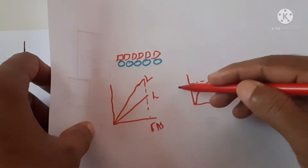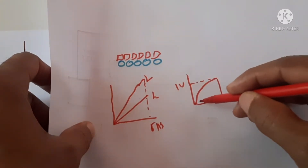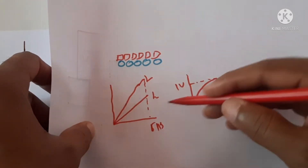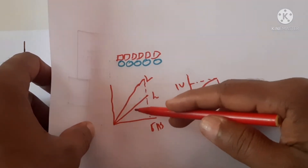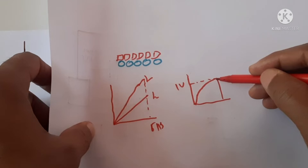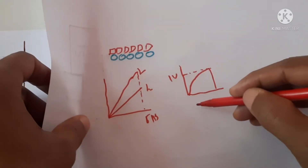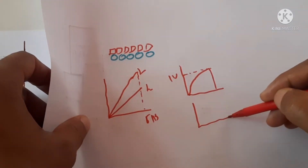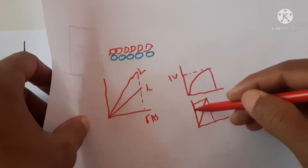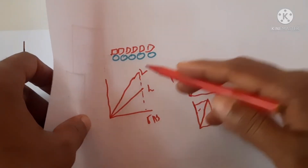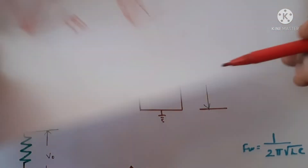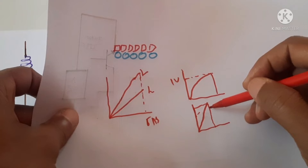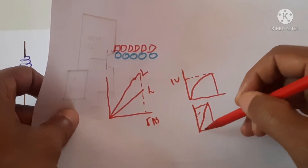If the inductance value is high, as the current is low, the capacitor takes more time to reach 1 volt. On the other hand, if the inductor value is very low, the inductor will not take more energy, so more current will flow through the circuit and the capacitor will be charged very soon, so the frequency will decrease.